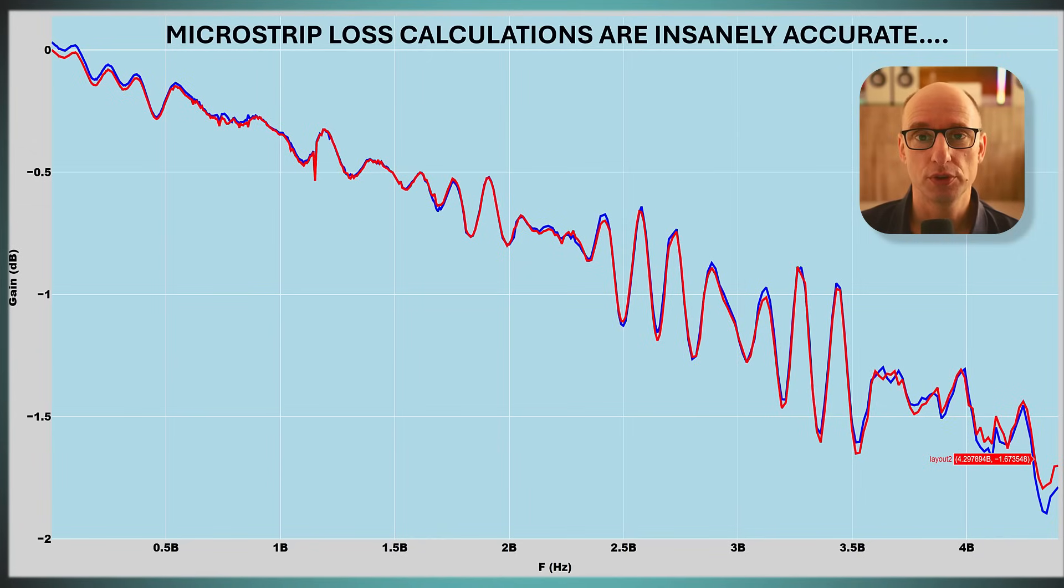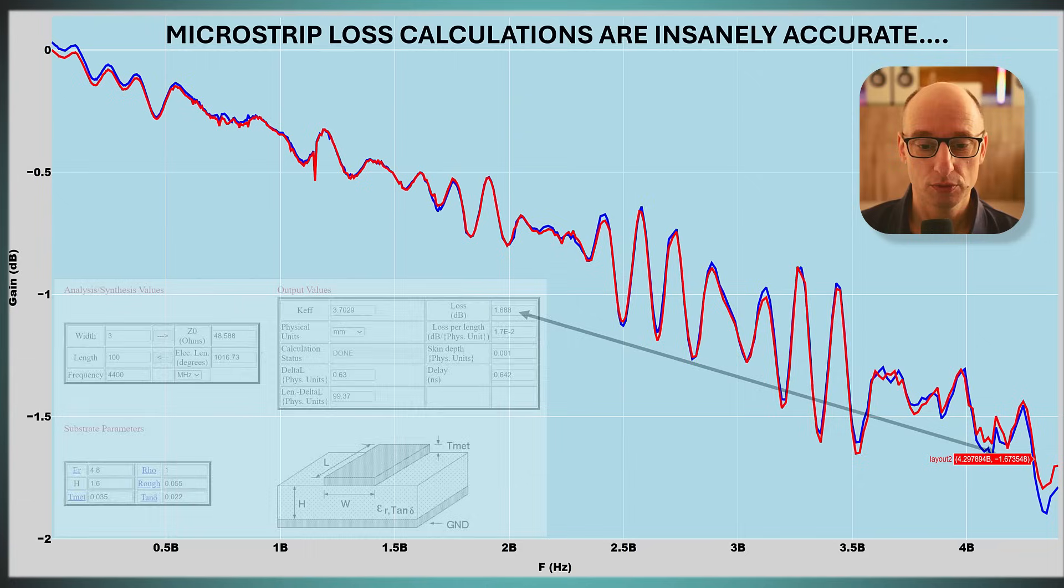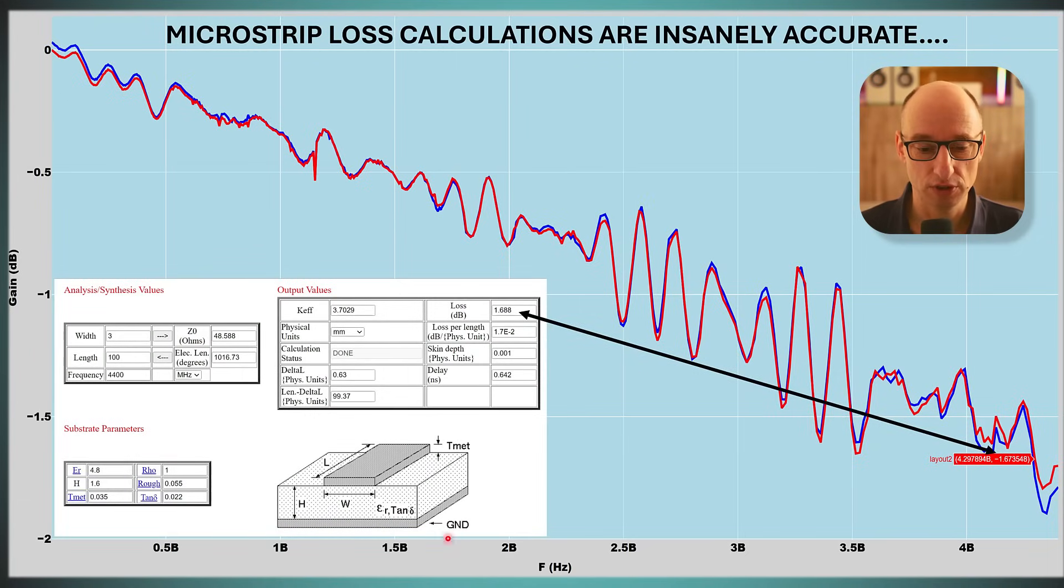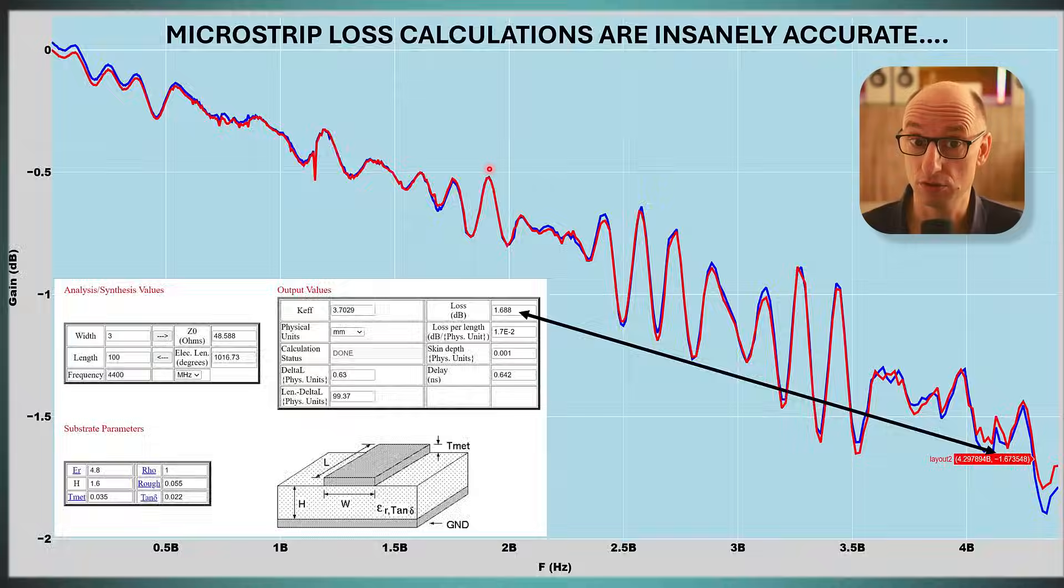There's something else I wanted to show you. MicroStrip loss calculations are extremely accurate. What you see here on the screen is a loss calculator from the Massachusetts Institute of Technology. You basically fill in all the information about the transmission line and all the parameters of the material and then you calculate the output. Look at the loss 1.68, 1.69, and what I actually measure is 1.67. I'm completely stunned by the accuracy of not only this simple network analyzer and its calibration but also the materials here. This is great.